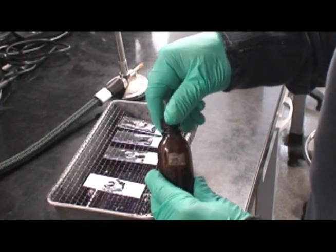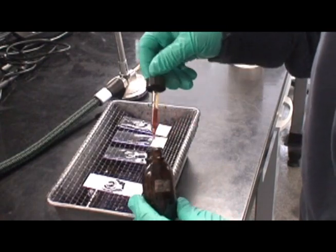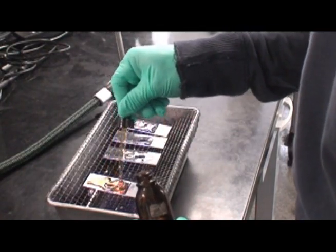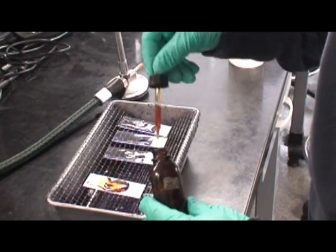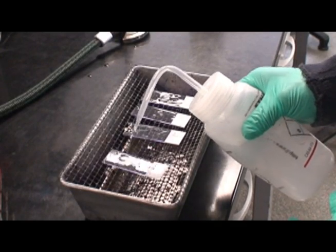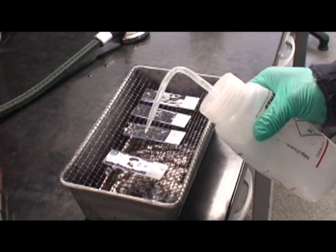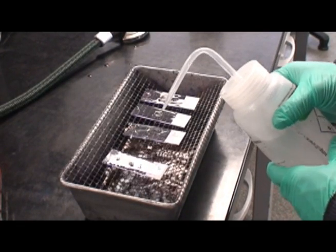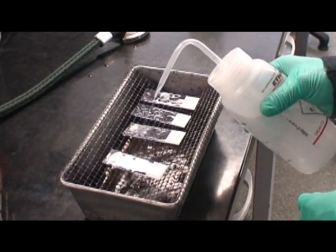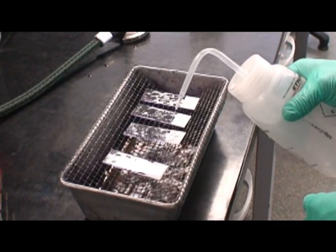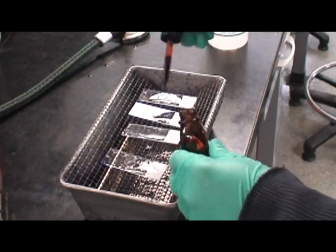Next, Gram's iodine is applied for 30 seconds. Once complete, the slide is briefly washed and flooded with either 70% ethanol or decolorizer. The exact time of this flooding depends on when the color dripping off the slide is no longer purple. When this occurs, stop decolorizing.